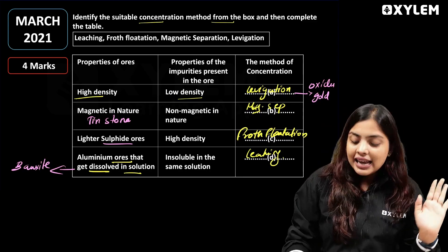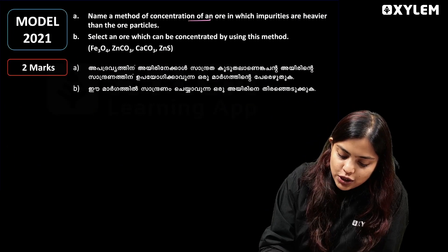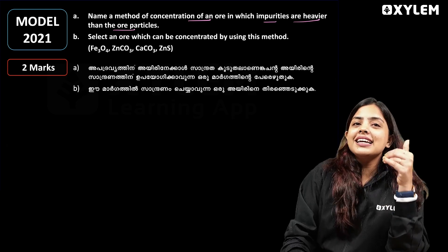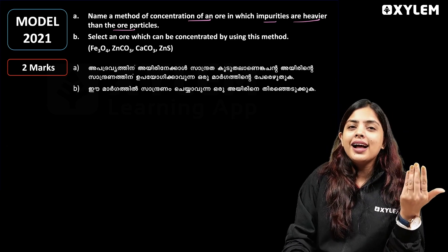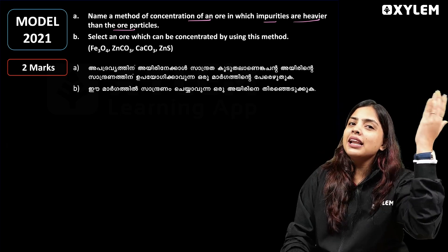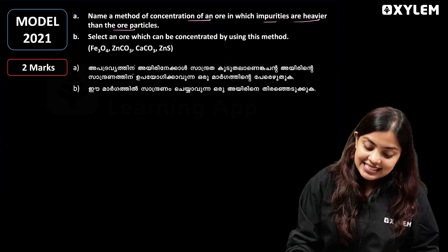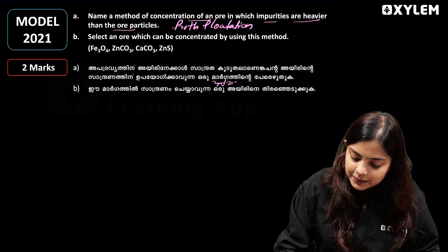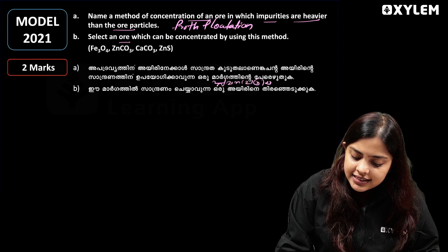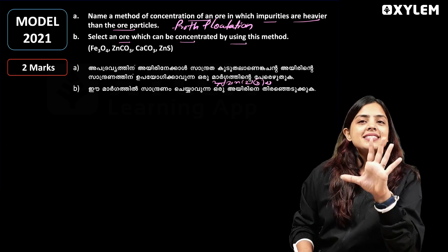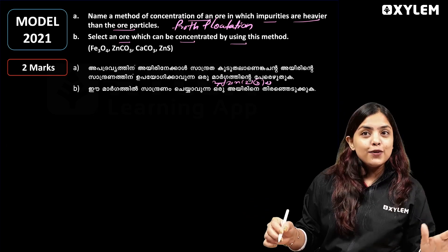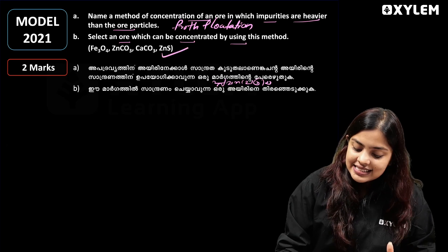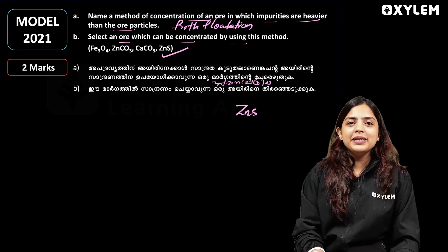Next question: name a method of concentration of an ore in which impurities are heavier than the ore particle. The answer is froth flotation — in froth flotation the ore particle is lighter and floats, while impurities are heavier and settle. An example ore that can be concentrated by this method is zinc blende, also called sulfide iron.